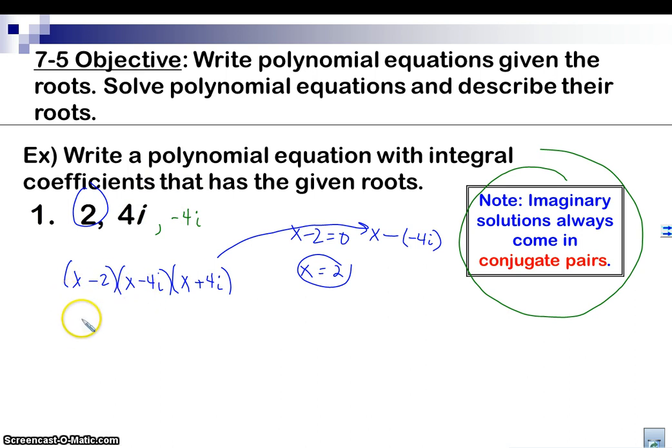Then I'm going to multiply this sucker out. So we've got x minus 2, use FOIL here, x squared, minus 4i x, plus 4i x, minus 16i squared.